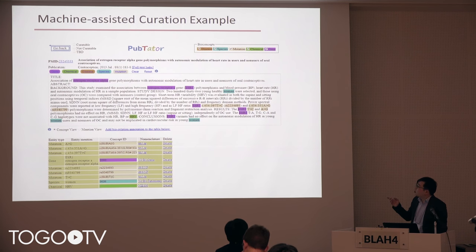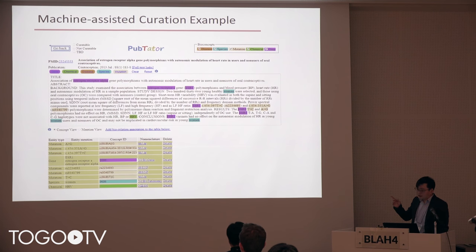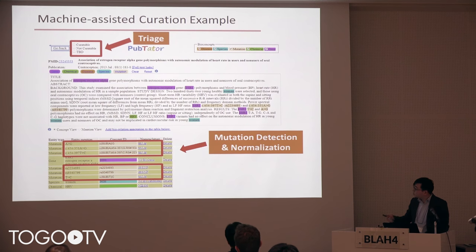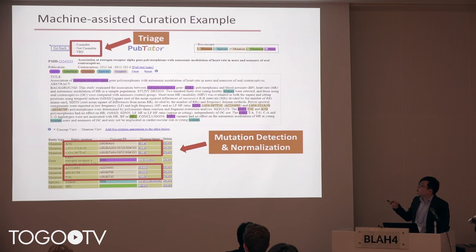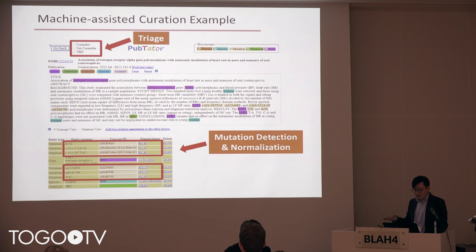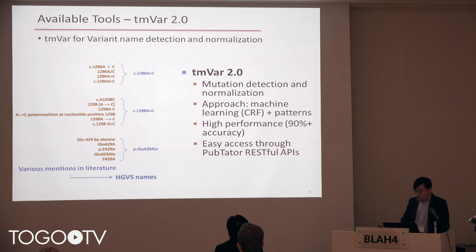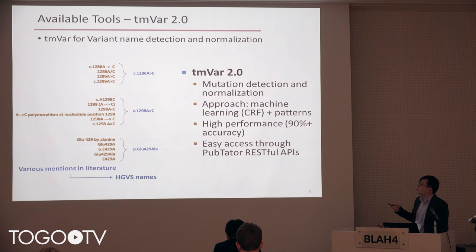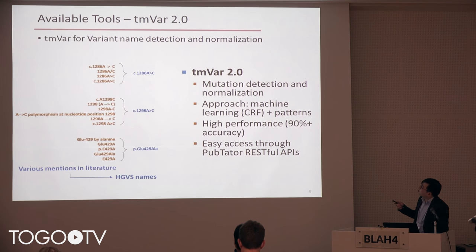In PubTator, you can see that biomedical entities are annotated, and some of them are normalized as well. Manual curators can simply click to mark results as curatable or to be decided, and it will be saved in the system so they can always check and continue later. Behind PubTator, there are NER tools like TNVAR 2.0, which is for variant name detection and normalization.